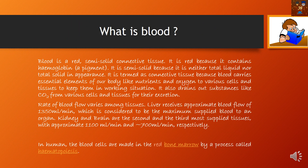Blood is a red semi-solid connective tissue. It is red because it contains a pigment called hemoglobin, which contains iron. It is semi-solid because it is neither liquid nor solid — it is a jelly-like substance.